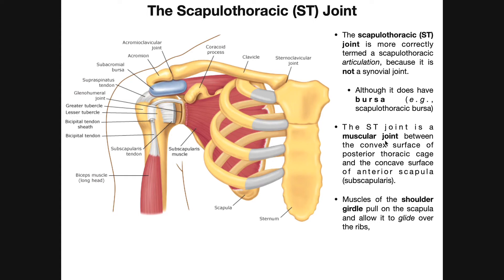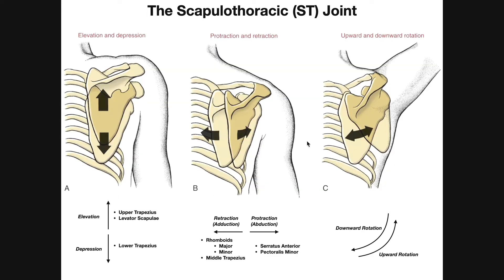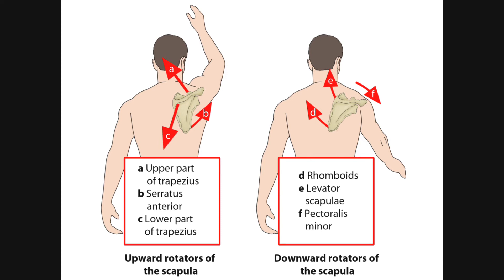The reason it's a muscular joint is because it's really an articulation with the subscapularis muscle. For upward and downward rotation, here's a good picture summarizing the muscles involved. Upward rotation of the scapula — seen during shoulder abduction such as lateral raises — is performed by upper trapezius, serratus anterior, and lower trapezius. The downward rotators of the scapula are the rhomboids (both major and minor), levator scapulae, and pectoralis minor.